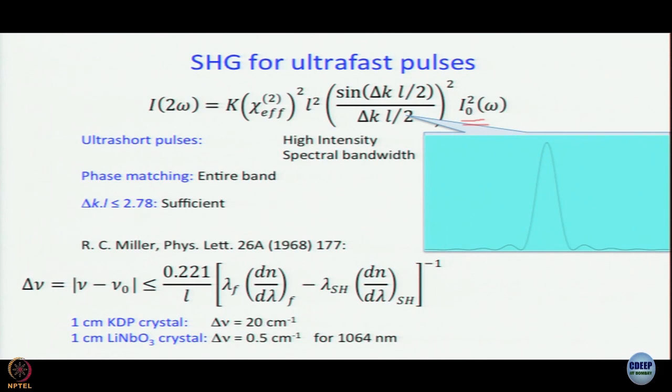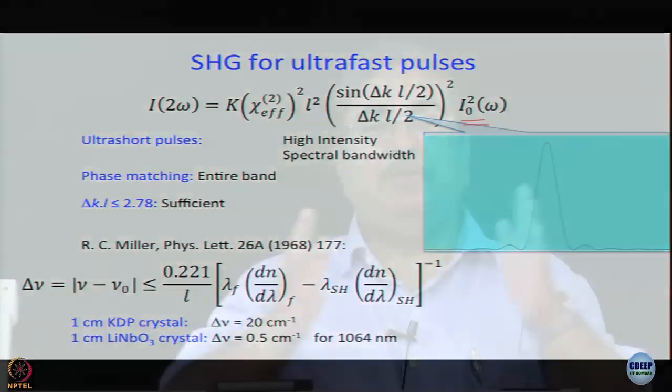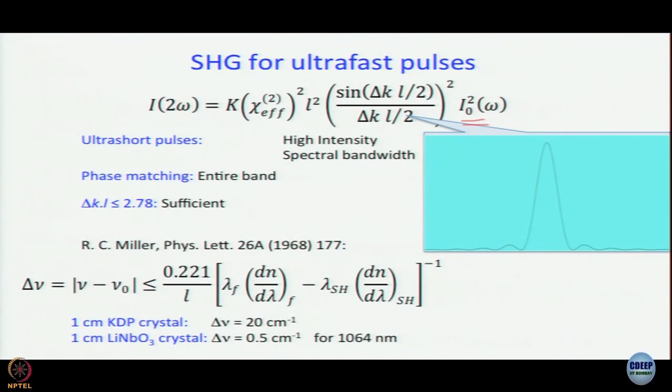Spectrally the second harmonic will become narrower, but temporally it will become broader if Δν is small. So in order to ensure that your ultrashort pulse remains ultrashort even after frequency doubling, you want Δν to be as large as possible. What determines Δν? The material. So this is an important point: you want to use a material for which Δν is large while working with ultrashort pulses.